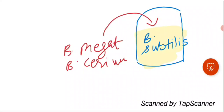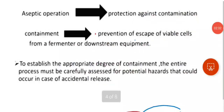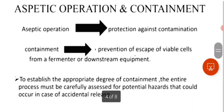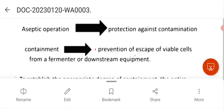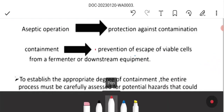Basically, aseptic conditions mean we don't want any contamination inside our fermenters. The next term is containment. Containment means prevention of the escape of viable cells from a fermenter or downstream equipment. Containment is different from aseptic operation.